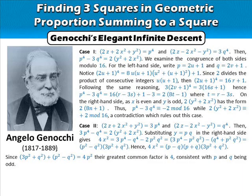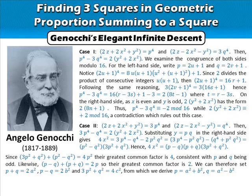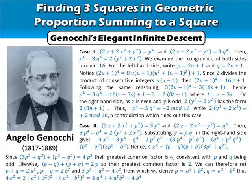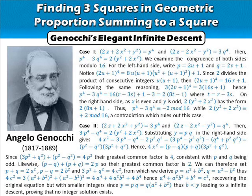Consistent with p and q being odd, and since (p - q) + (p + q) = 2p, the greatest common factor is 2. We can therefore set p + q = 2a², p - q = 2b², and 3p² + q² = 4c², from which we derive p = a² + b². Hence a⁴ + a²b² + b⁴ equals a perfect square — recovering the original equation but with smaller integers, since y = pq = q(a² + b²), thus b is smaller than y, leading to an infinite descent and proving that no integer solution exists.